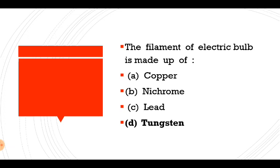The filament of an electric bulb is made up of tungsten — option D is correct. Tungsten is the metal with the highest melting point.